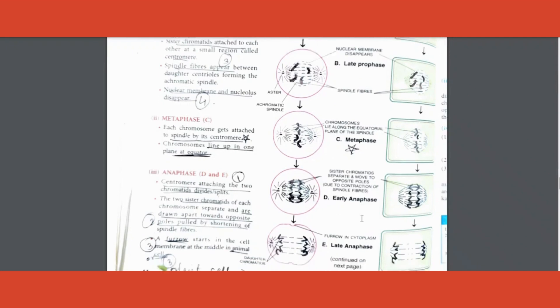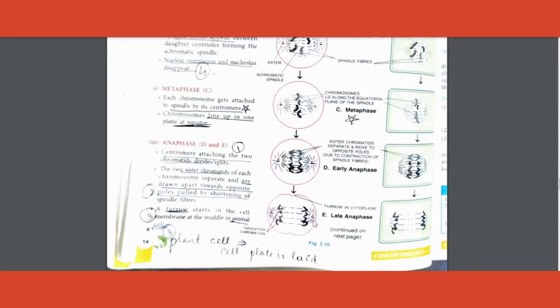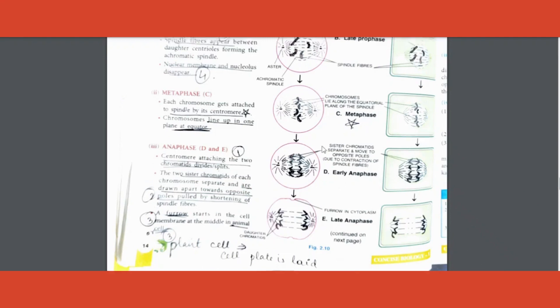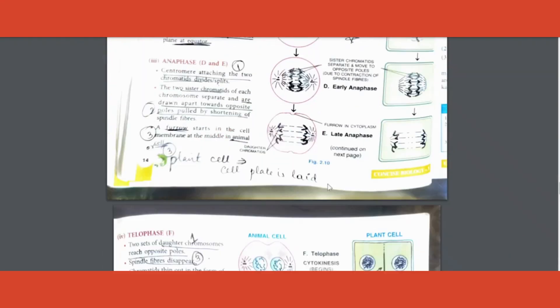Metaphase - on the plane all of them are lined up and the centromeres are attached to spindle. Anaphase is easy - they all start moving towards both ends. What is the point? Centromere attaching to the two chromatids splits and then starts making the chromatids move towards both poles.